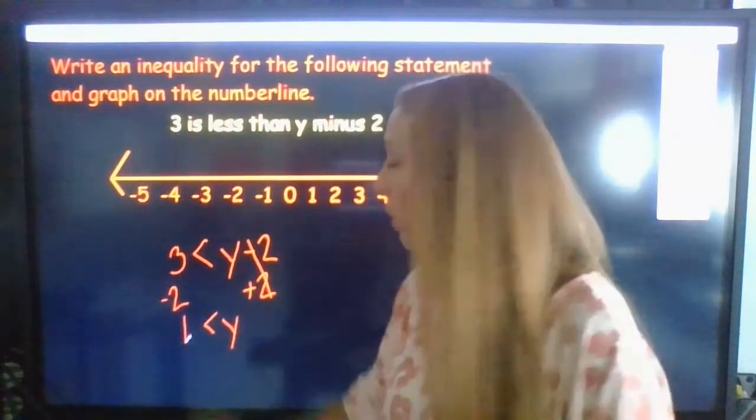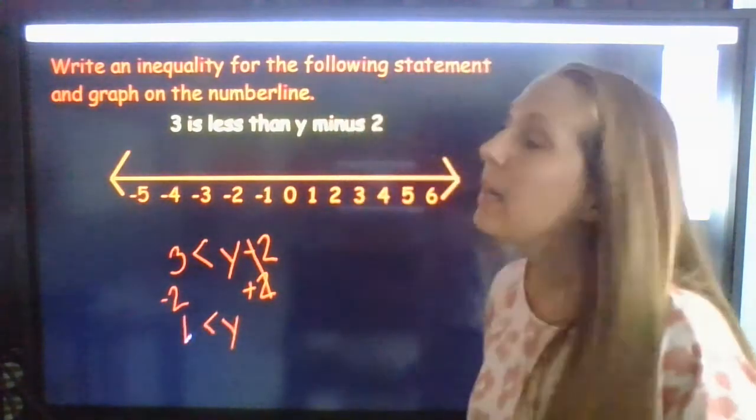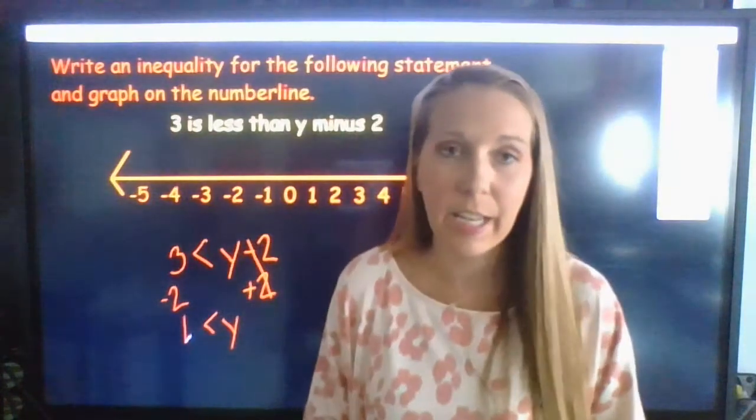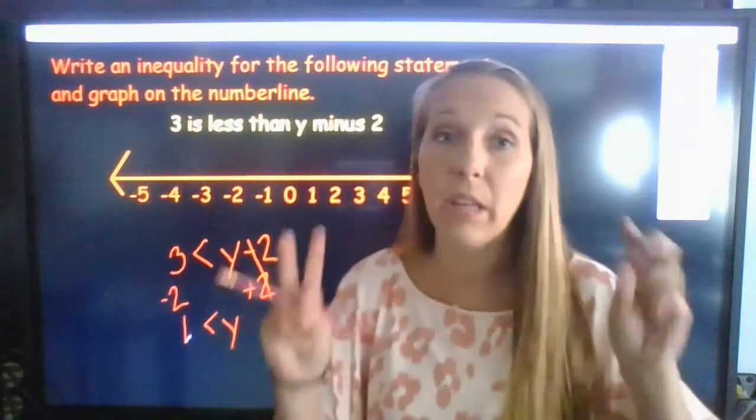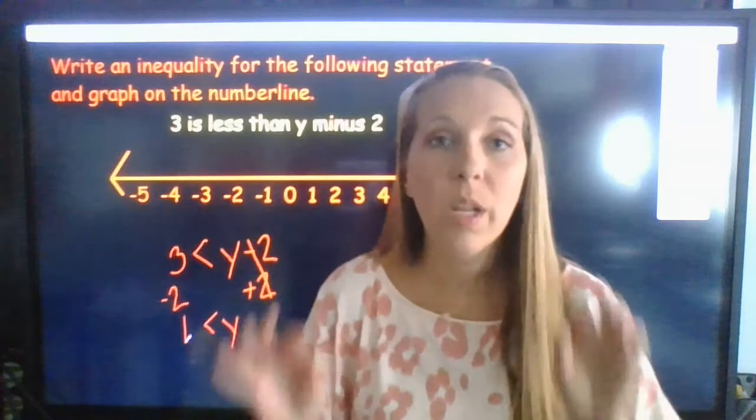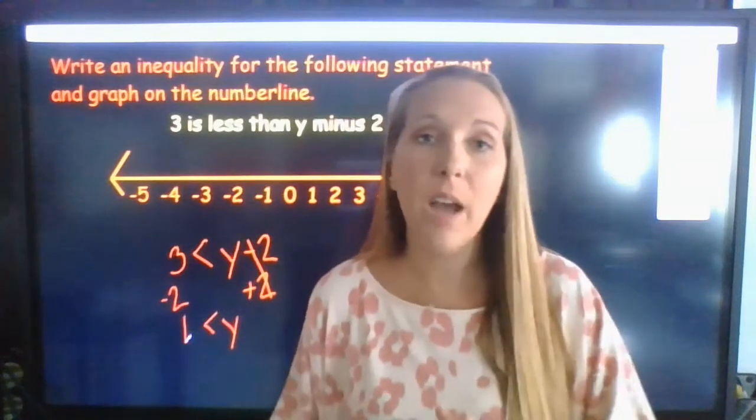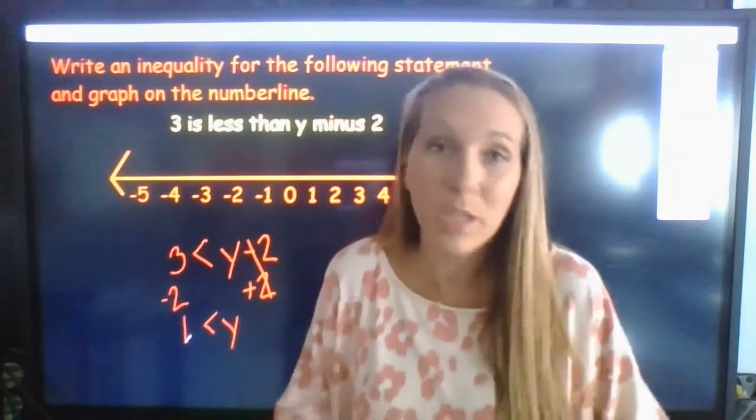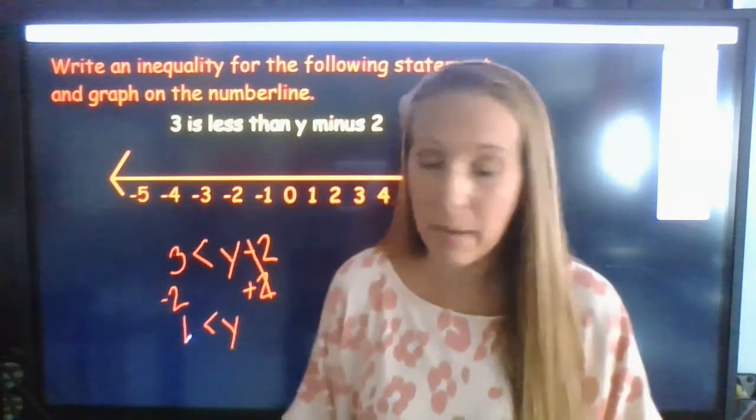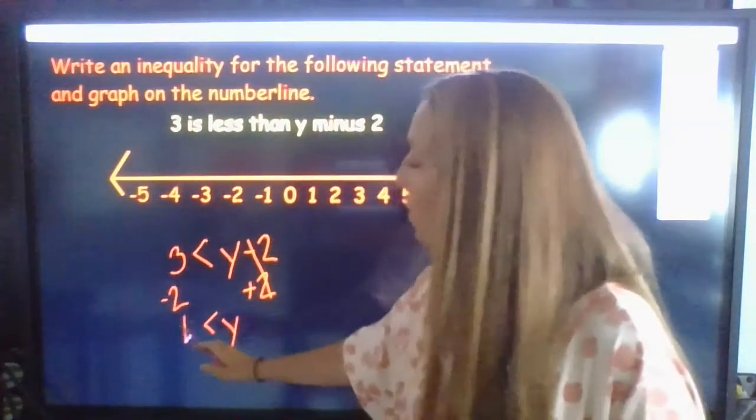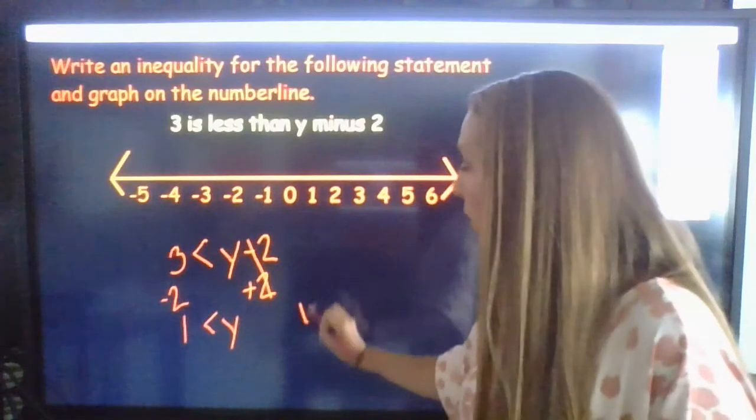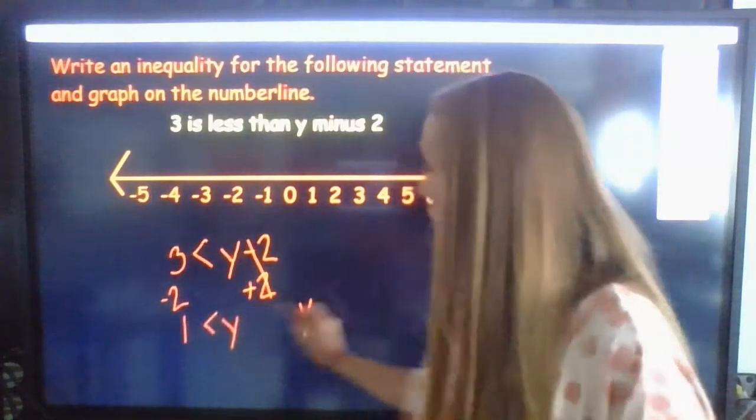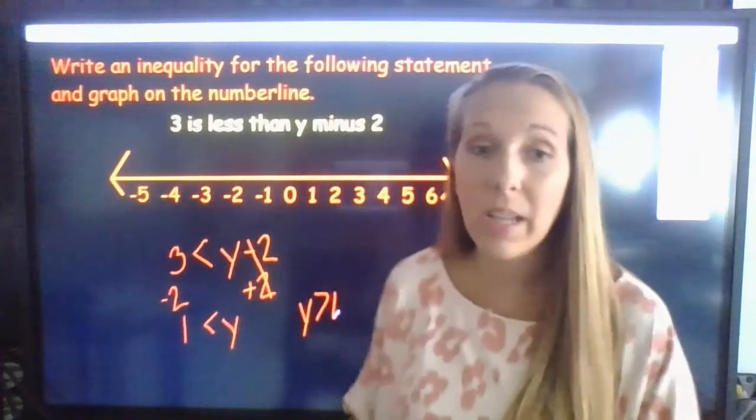You could also read that left to right, 1 is less than y. Now, if you wanted to graph it very easily, we could use the arrow rule, but only if the variable is on the left. If the variable is not on the left, we can just reverse it, or you can just read it backwards. It means the same thing. So basically, you could say 1 is less than y, or you could read it backwards and say y is greater than 1. And it still means the exact same thing.